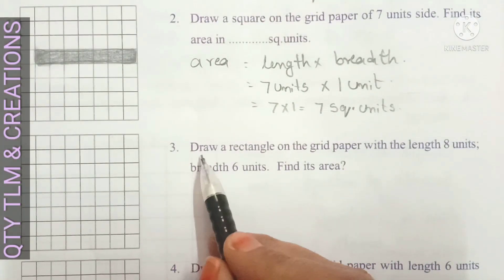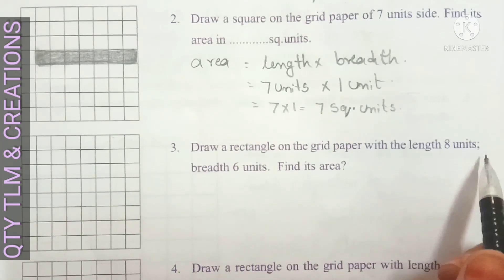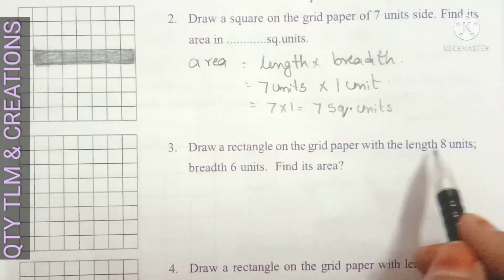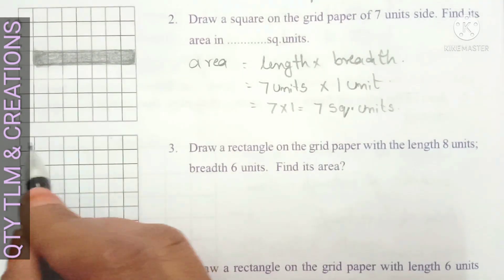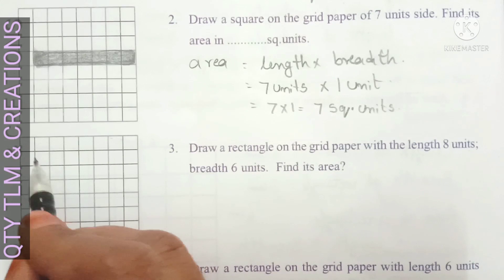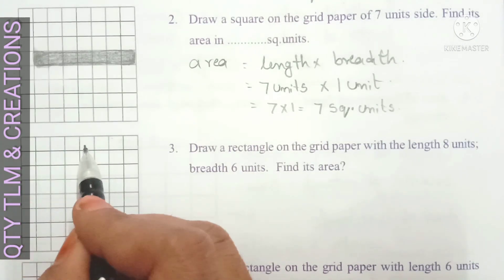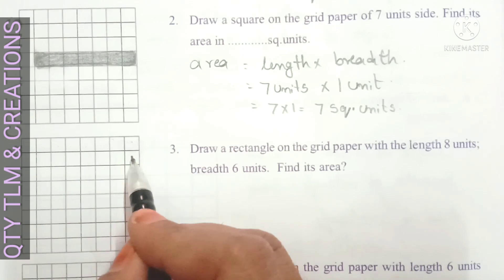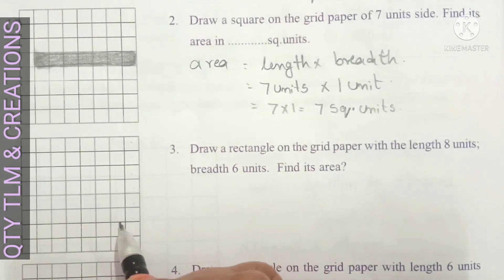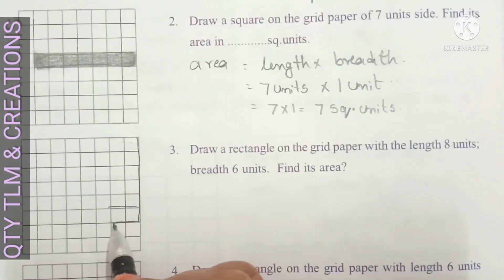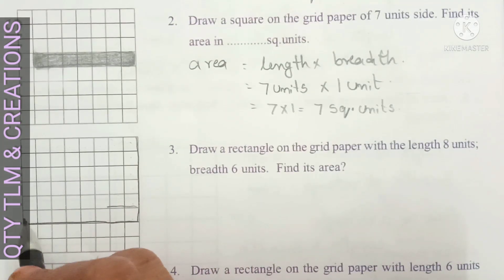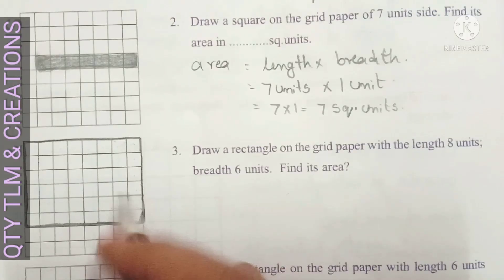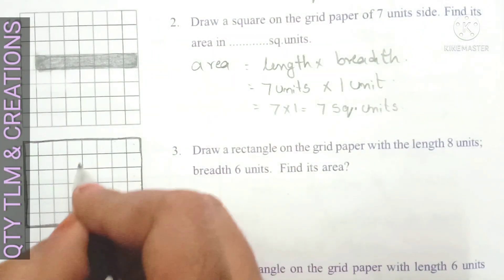Next question: draw a rectangle on the grid paper with length eight units and breadth six units, and find its area. Length of rectangle is equal to eight units, so we can take eight boxes here: one, two, three, four, five, six, seven, eight. And breadth is six units: one, two, three, four, five, six. So length is equal to eight units.